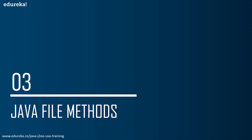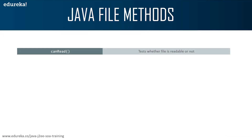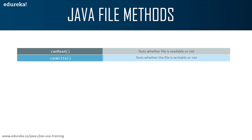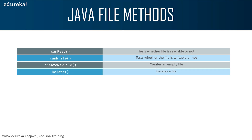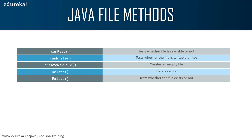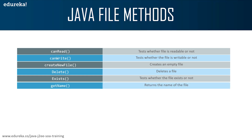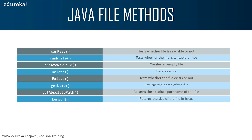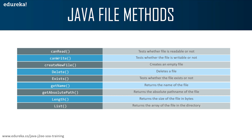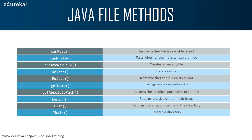Now let's have a look at the various file methods useful to perform Java file operations. canRead tests whether the file is writable or not. createNewFile creates an empty file. delete deletes the file. exists tests whether the file exists or not. getName returns the name of the file. getAbsolutePath returns the absolute path name of the file. length returns the size of the file in bytes. list returns an array of files in the directory, and mkdir creates a directory.